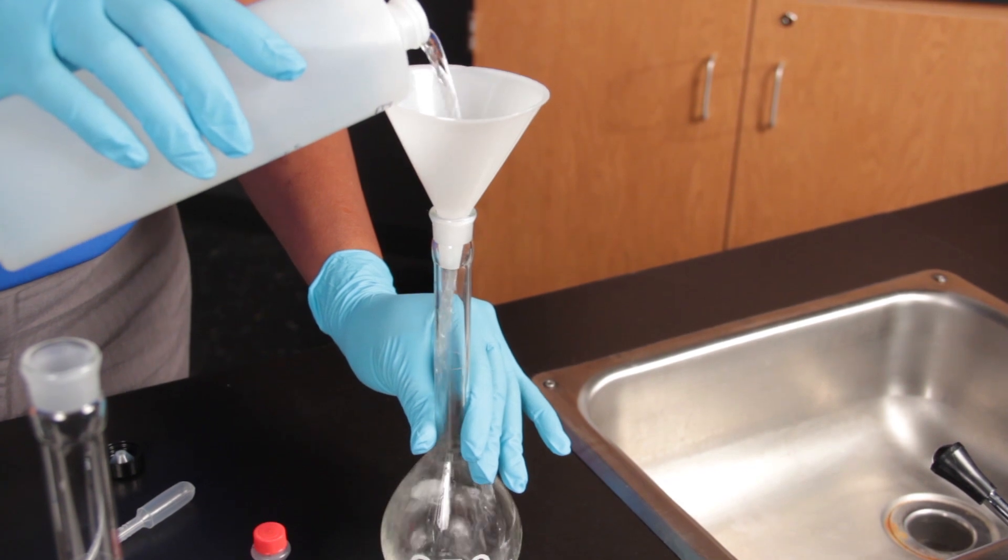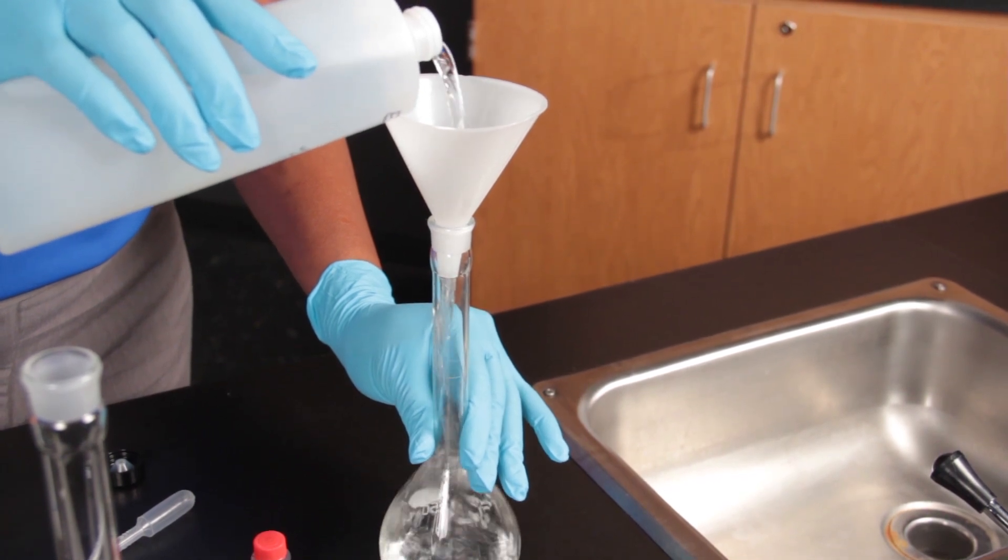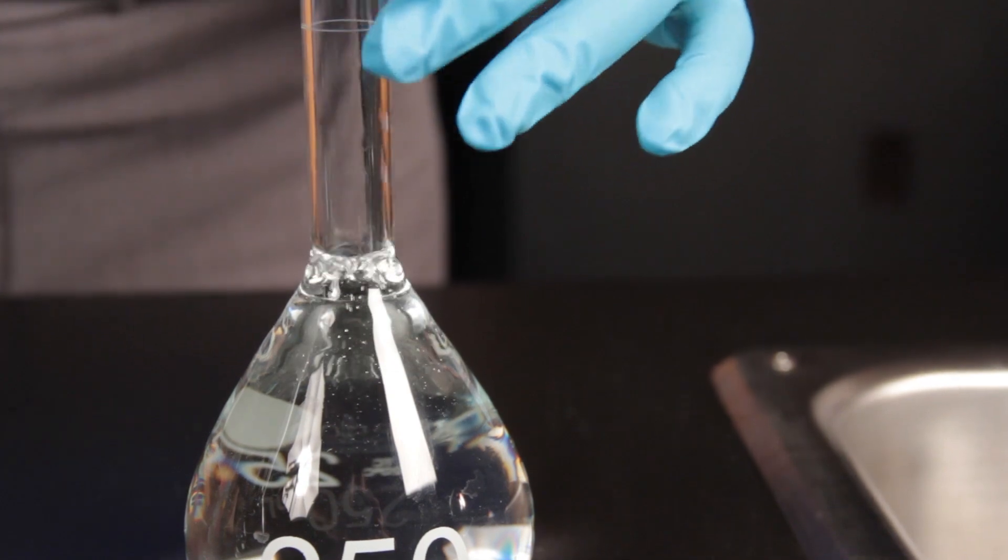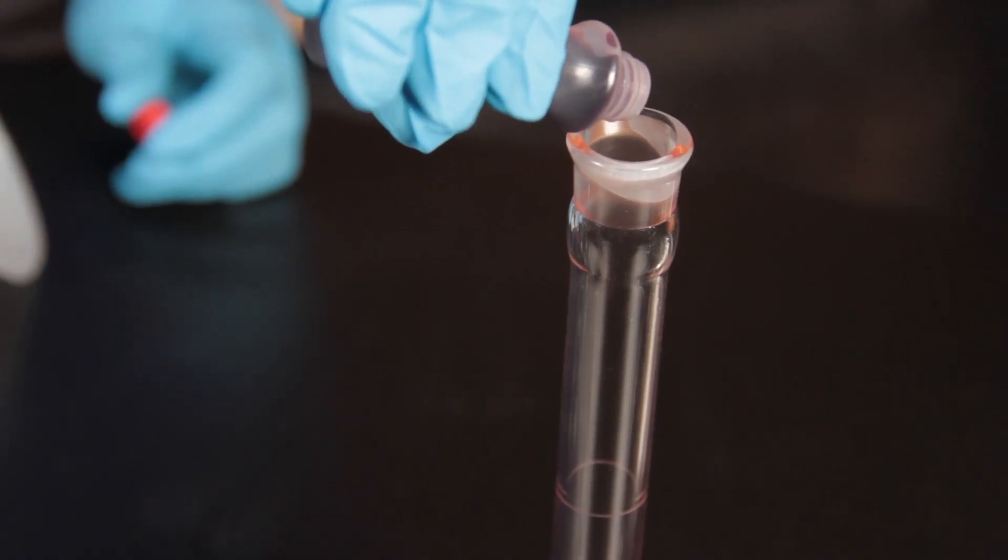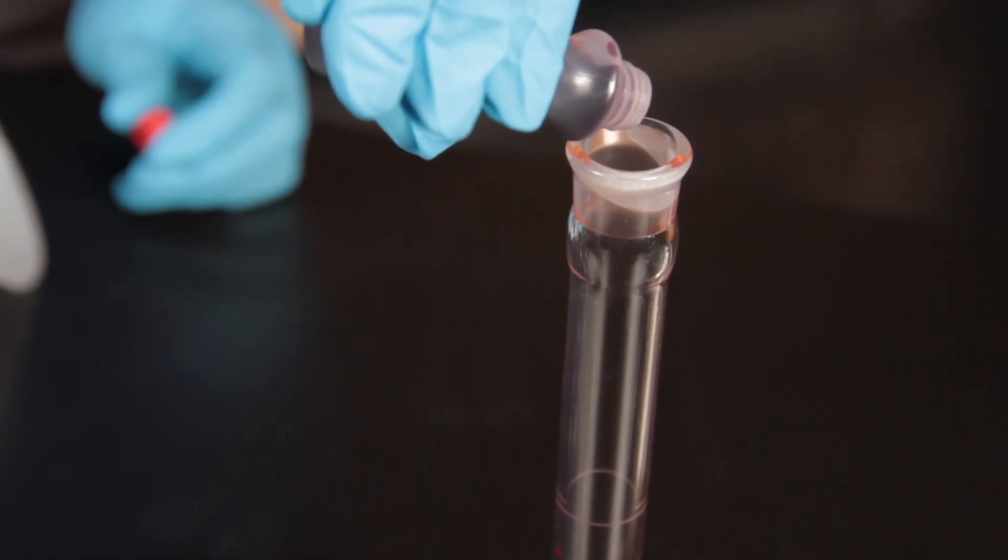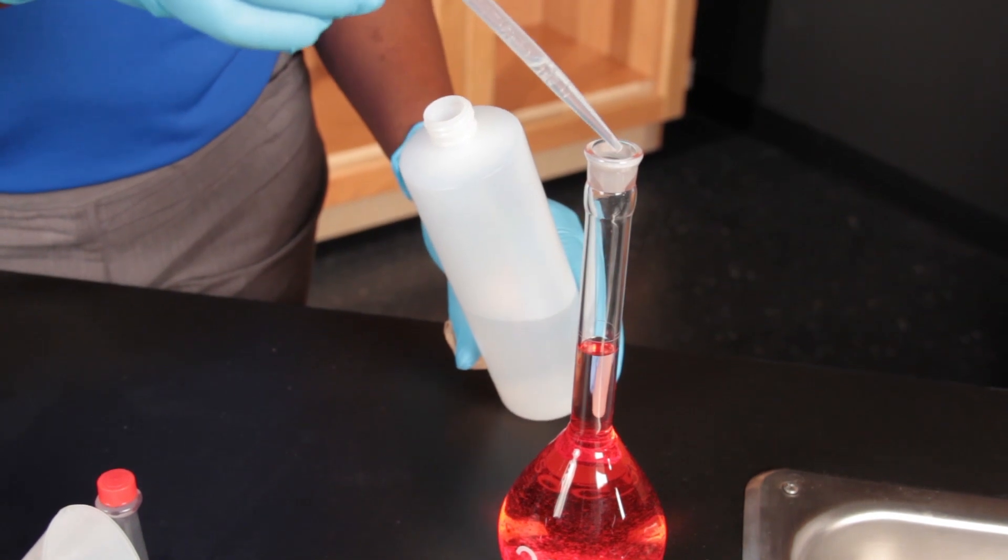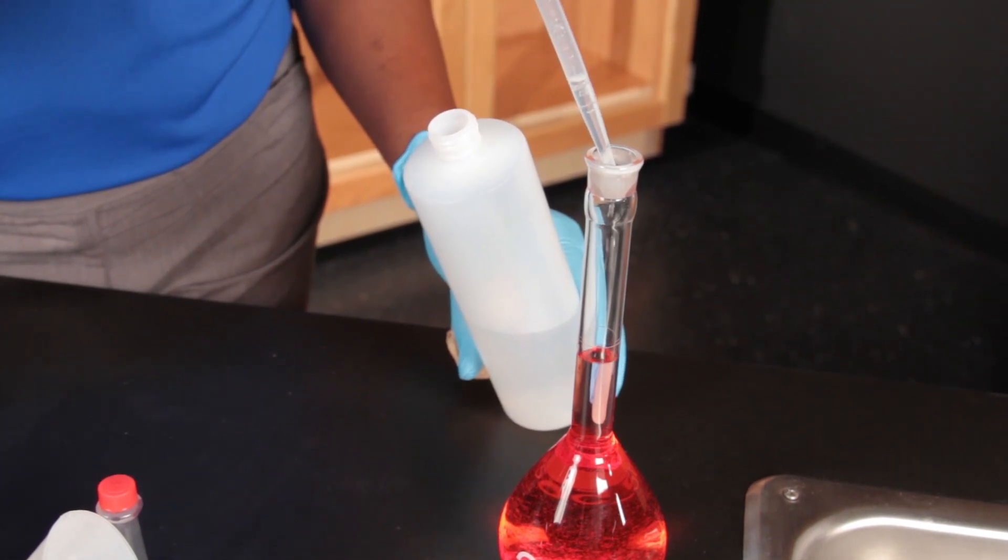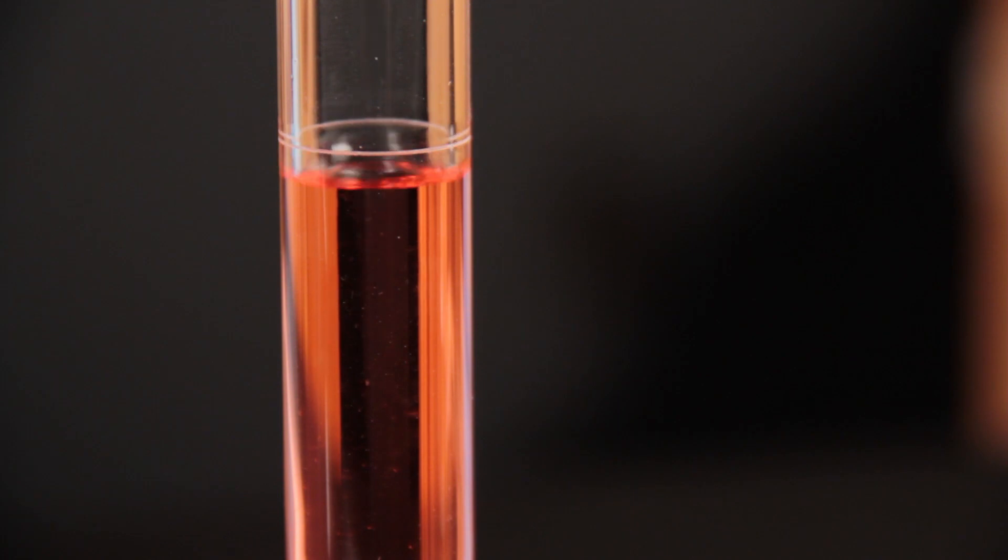Fill the first volumetric flask with ethanol, but not to the etched line. Add a few drops of food coloring to the flask. Now use a pipette to fill the rest of the flask up to the etched mark.